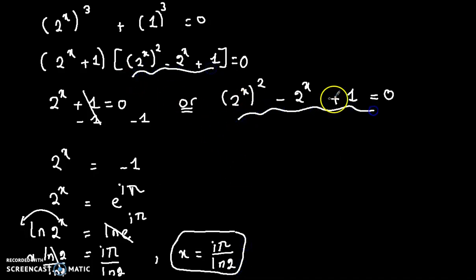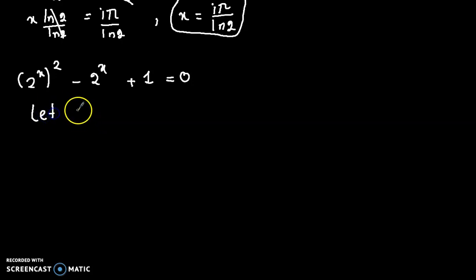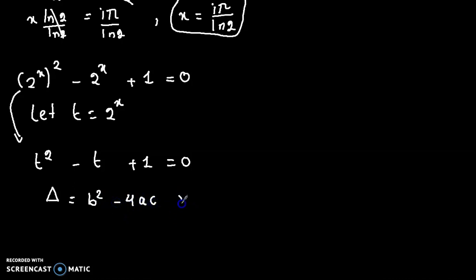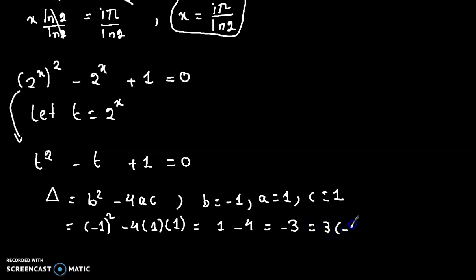For the second equation, let's solve it and find the value of x. We take t equal to 2 to the power x, so we have t squared minus t plus 1 equal to 0. It's a quadratic equation. The discriminant delta equals b squared minus 4ac, where b equals minus 1, a equals 1, and c equals 1. So b squared minus 4ac equals 1 minus 4 equals minus 3, which equals 3 times minus 1, and minus 1 equals i squared, so delta equals 3i squared.